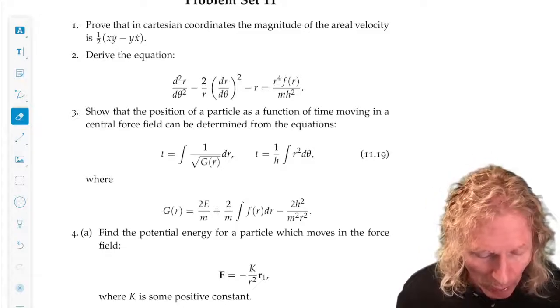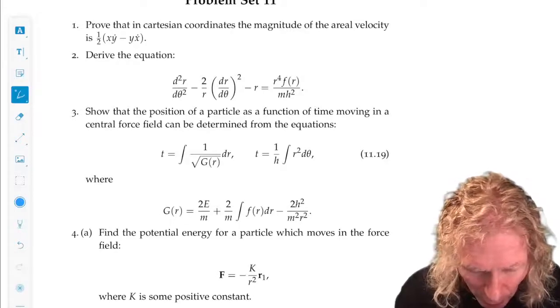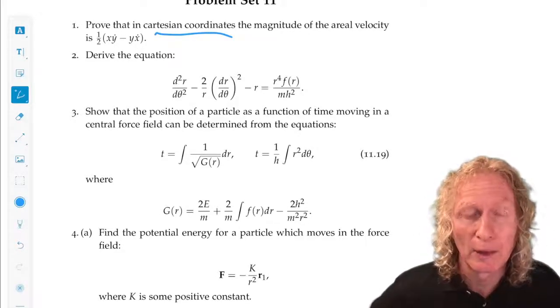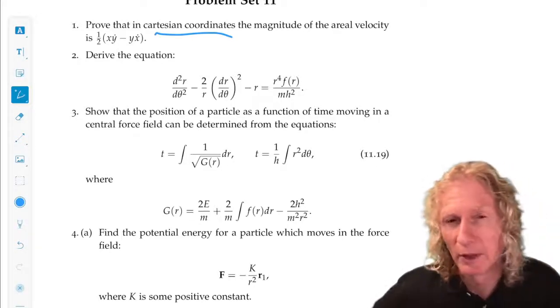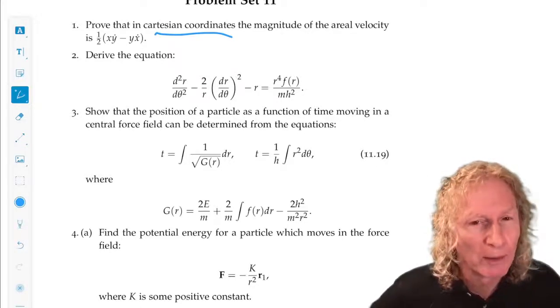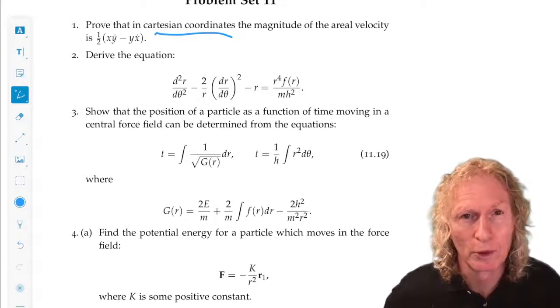So problem one is show that in Cartesian coordinates, the magnitude of the aerial velocity is one-half xy dot minus yx dot. We derived it in polar coordinates. All you need to do is transform back from polar coordinates to Cartesian coordinates.